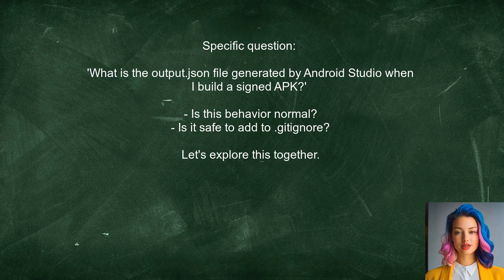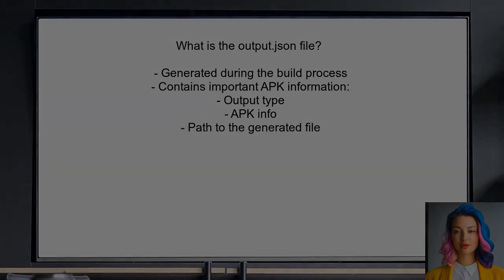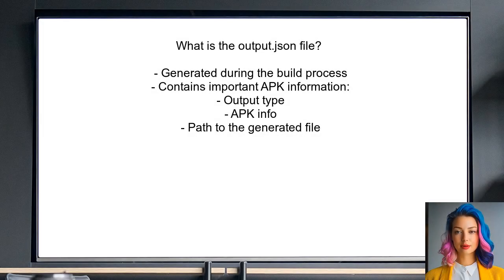Let's explore this together. What exactly is this output JSON file? It's generated during the build process and contains important information about the APK that was created. This includes details like the output type, APK info, and the path to the generated file. Understanding this can help you manage your project better.